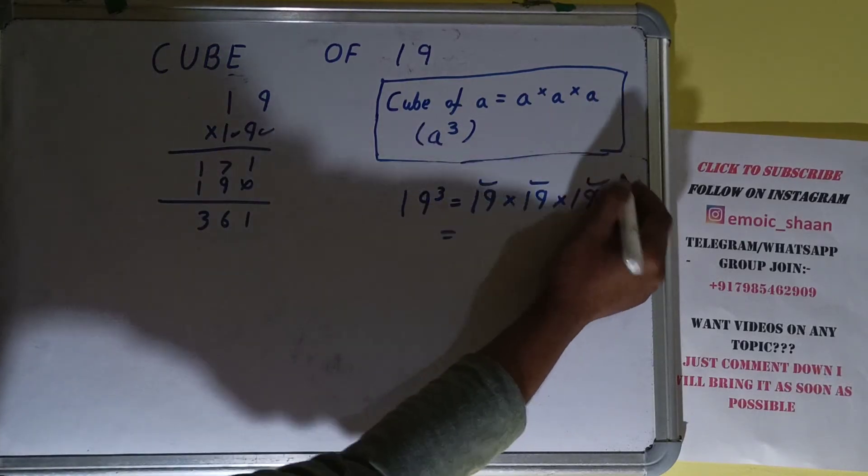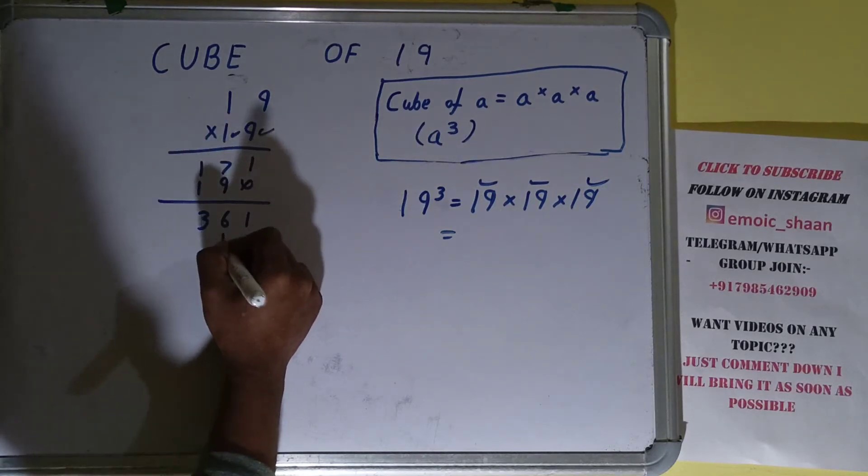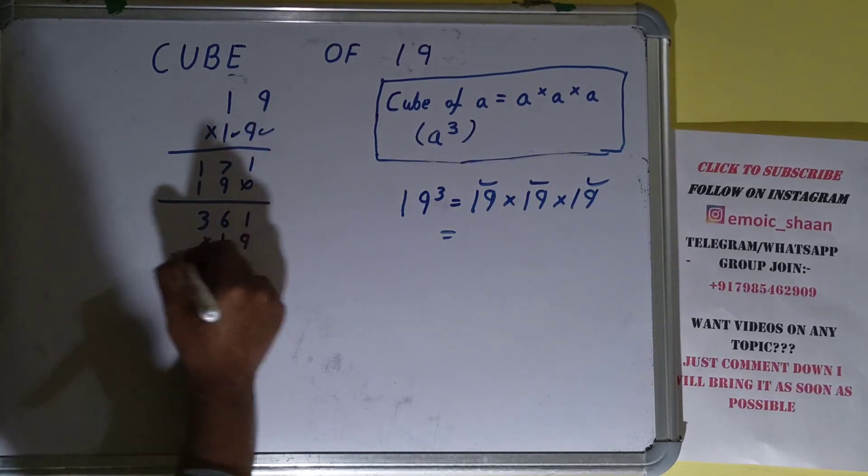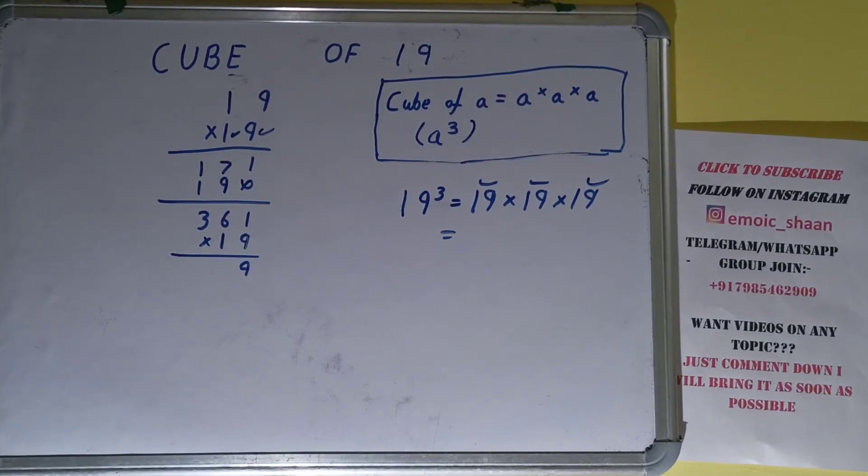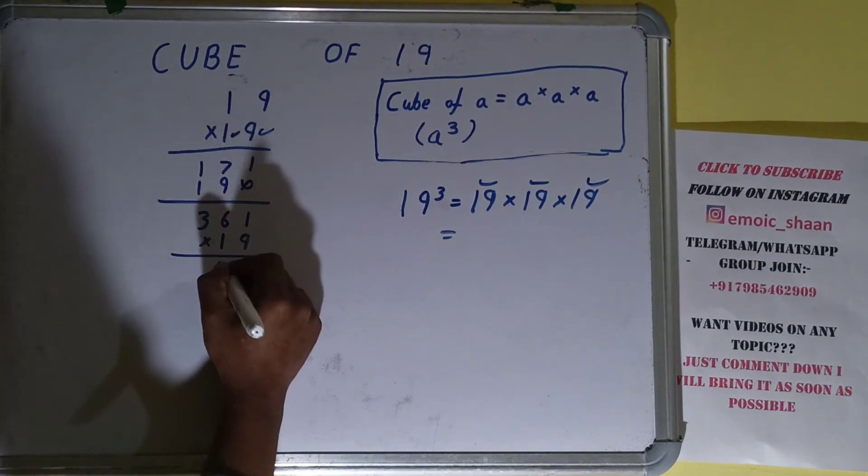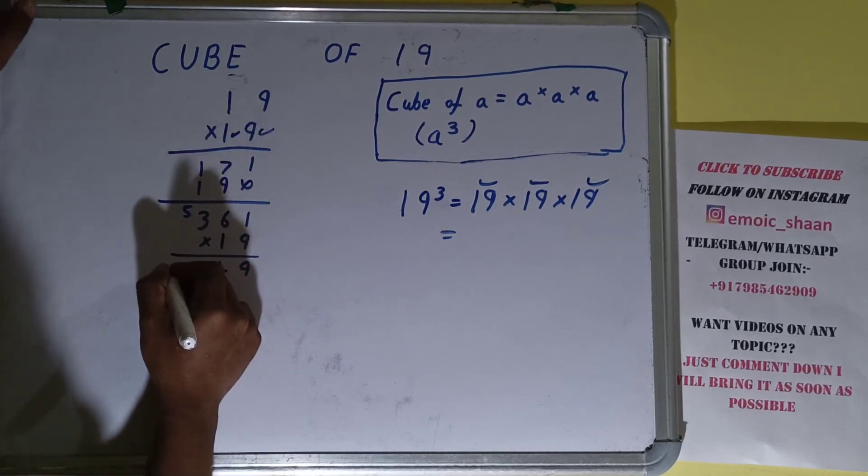Now this 19 we need to multiply with this answer. 9 times 1 is 9. 9 times 6 is 54, 5 carry. 9 times 3 is 27 plus 5 is 32.